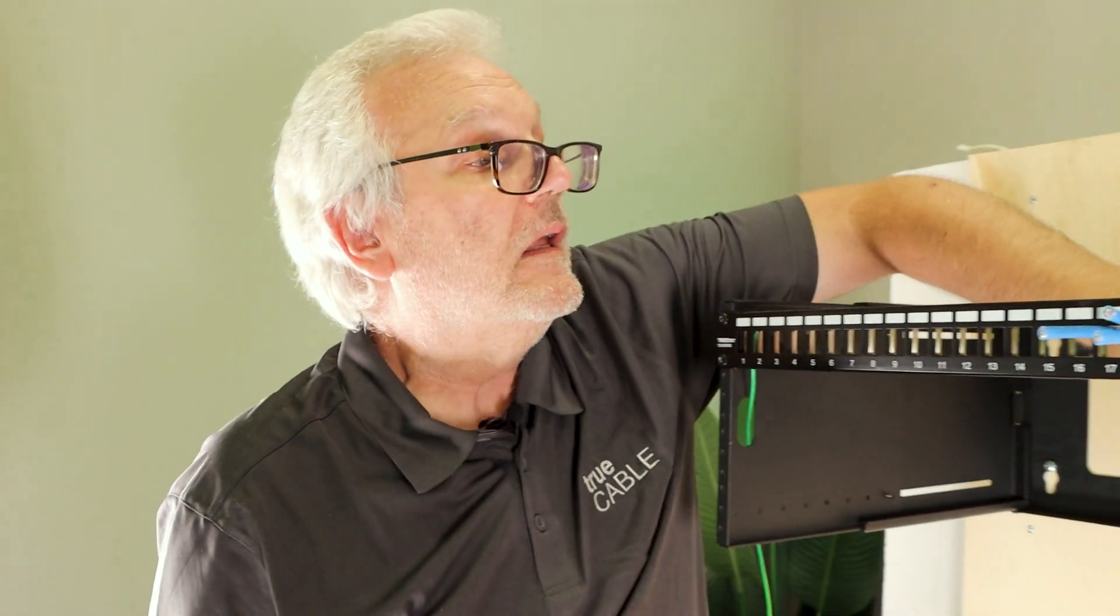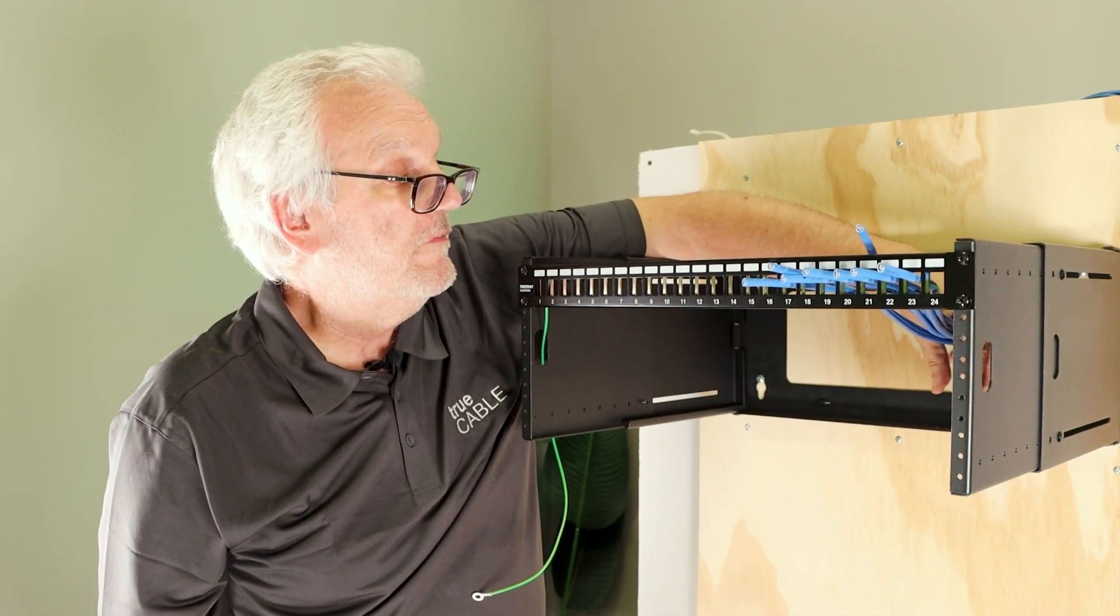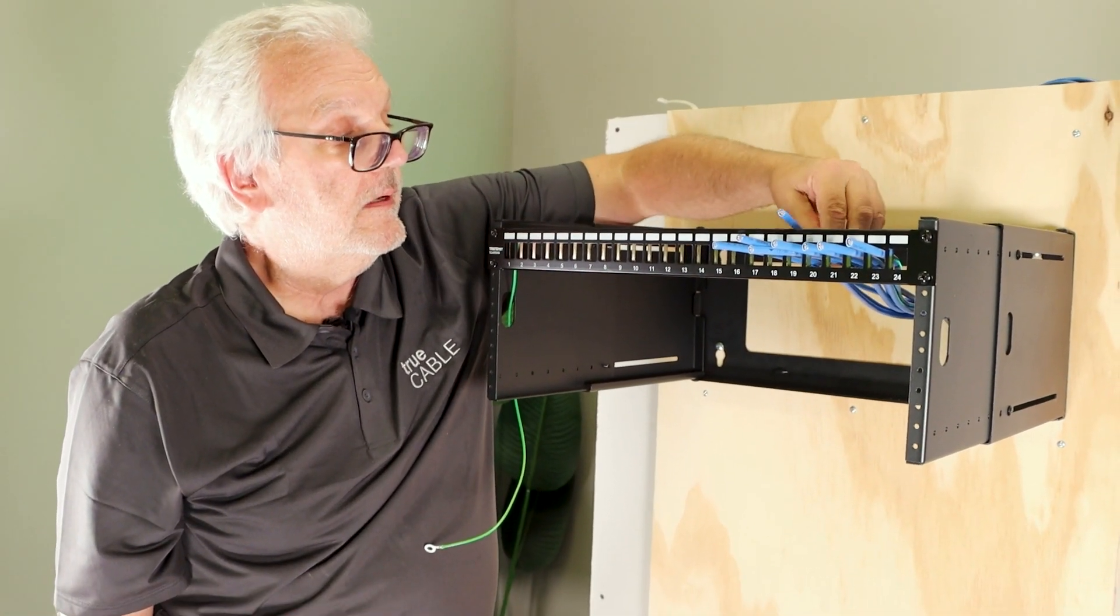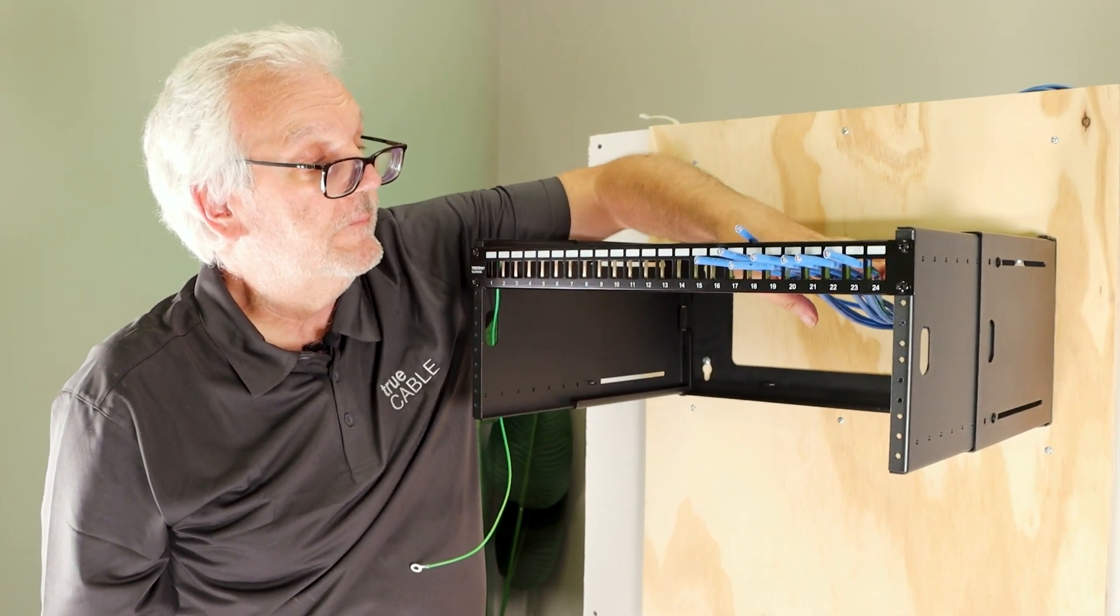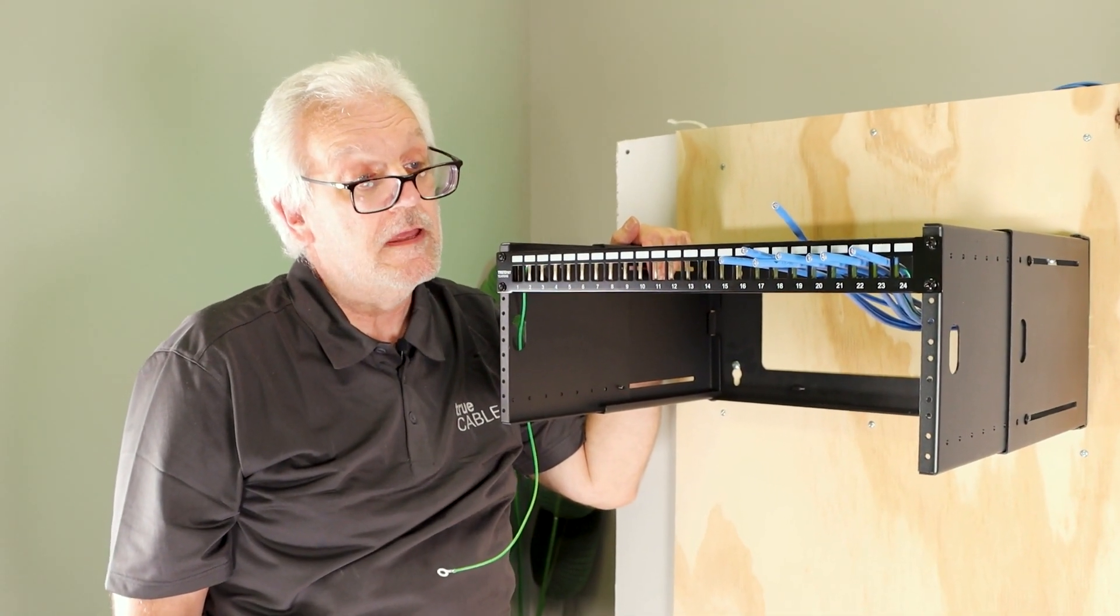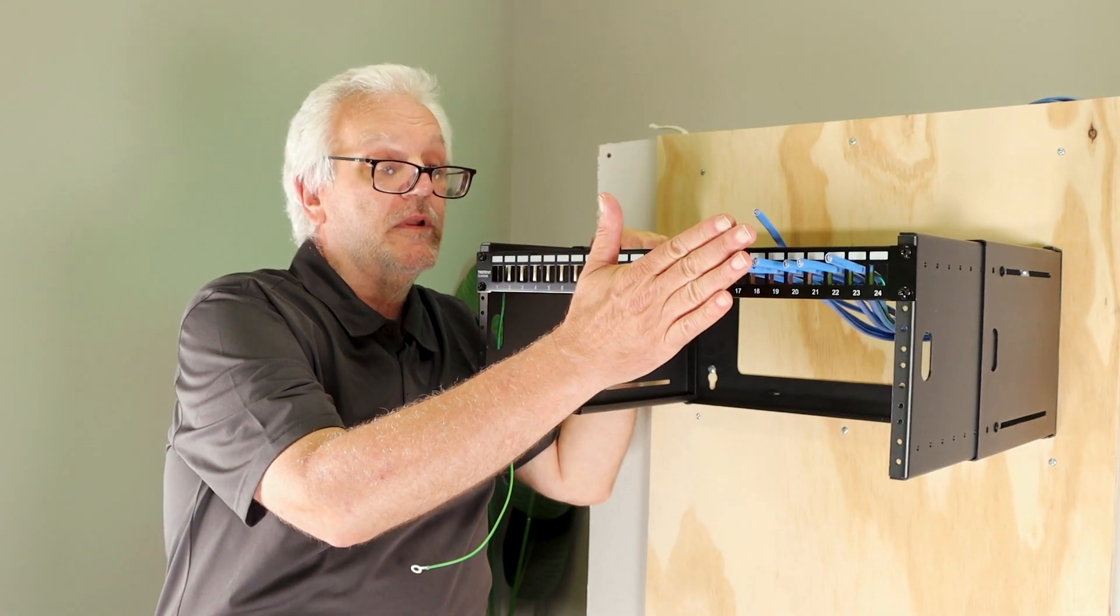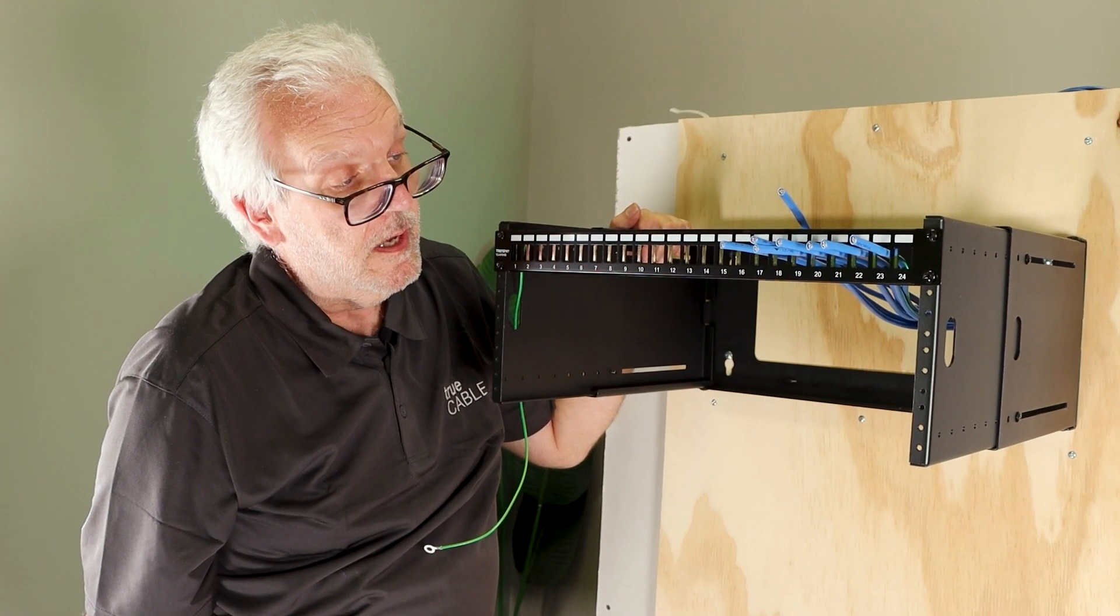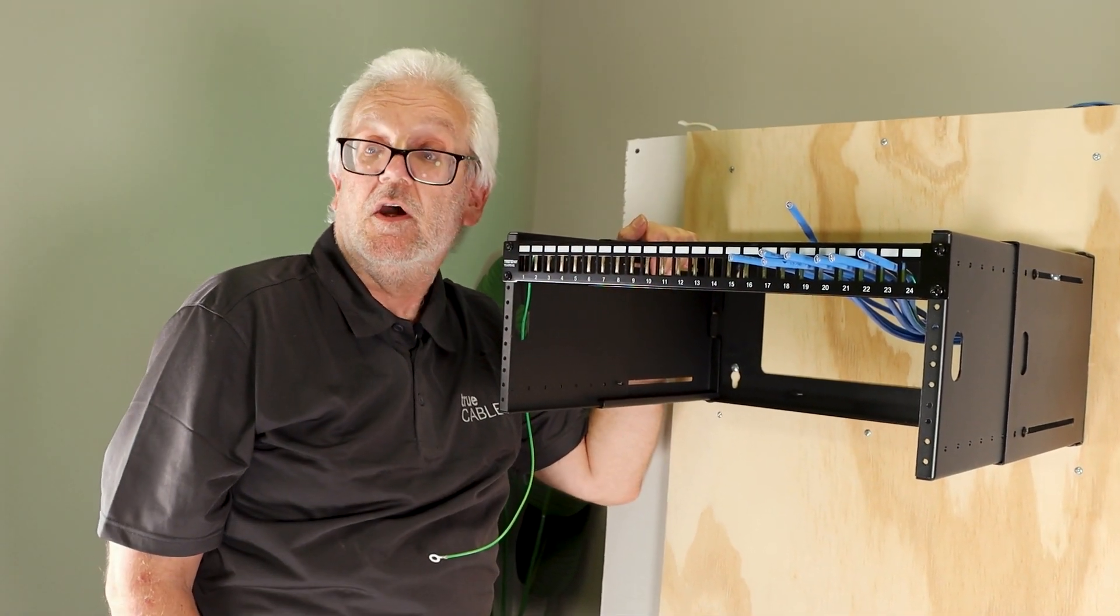So that's how I go about doing this. We'll use some Velcro in the back to hold it into a nice tight bundle, and then the lacing bar will keep them from crossing over each other. And once terminated, the keystone jack can snap right into the patch panel and we'll be ready to go.